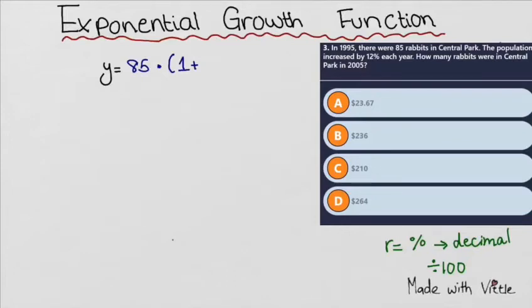In this equation, the rate of growth is in percentage, so we need to change it to decimal. We divide 12% by 100, which gives us 0.12 to the power of t.